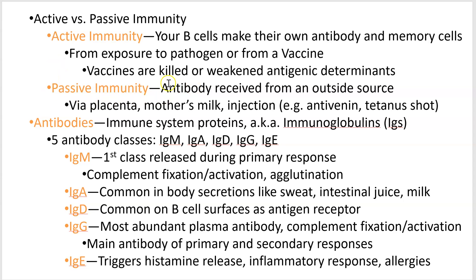Passive immunity is when you just get antibodies — you don't make your own antibodies, you don't build memory cells, you don't build your own plasma cells. You're getting free antibody. Fetuses get this from the placenta, newborns get it from their mother's milk, and you can get it via injection. If you get bitten by a really dangerous venomous snake like a cobra, you're not going to want to go through that primary response — it's so toxic it could kill you before you build up antibodies to it.